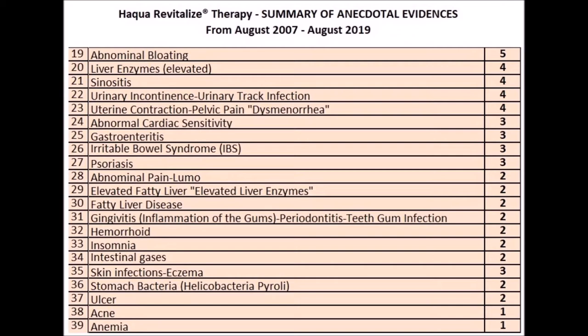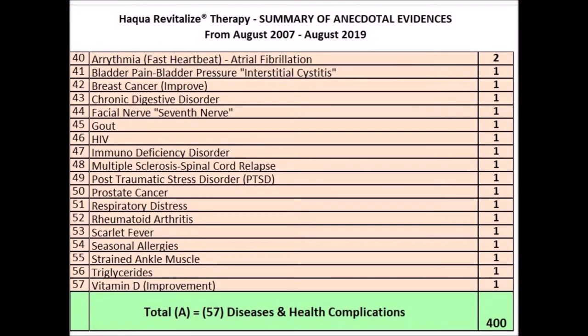32. Hemorrhoid: 2 people. 33. Insomnia: 2 people. 34. Intestinal gases: 2 people. 35. Skin infections, eczema: 3 people. 36. Stomach bacteria: 2 people. 37. Ulcer: 2 people. 38. Acne: 1 person. 39. Anemia: 1 person. 40. Arrhythmia or fast heartbeat: 1 person.